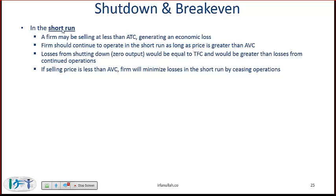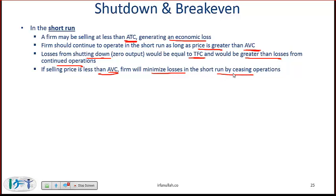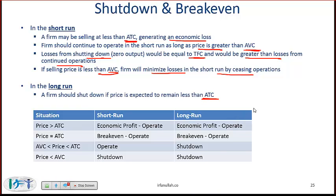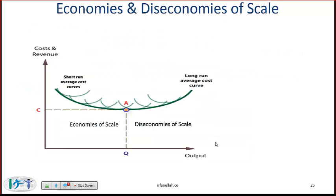Shutdown and break-even: in the short run, a firm may be selling at less than average total cost and generating an economic loss. A firm should continue to operate in the short run as long as the price at which it is selling is greater than average variable cost, because losses from shutting down would equal total fixed cost and would be greater than the loss from continued operations. If selling price is less than average variable cost, the firm will minimize losses by ceasing operations. In the long run, a firm should shut down if the price is expected to remain less than average total cost.